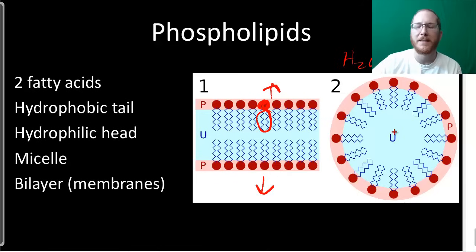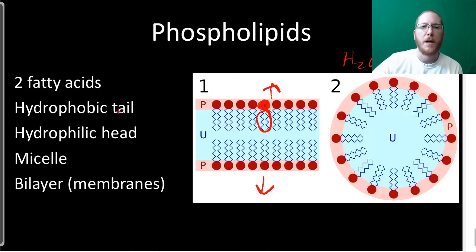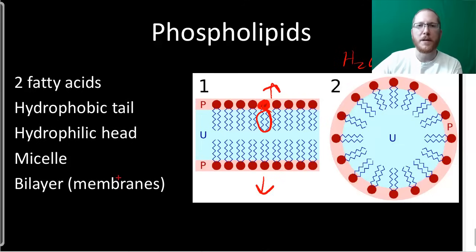Phospholipids and lipids in general make very good barriers because they want to stick together and will form bilayers and micelles pretty much automatically. We'll talk about this later when we get to the idea of where we might have gotten our first cells — that hydrophobic property causing these structures is an important part of that.